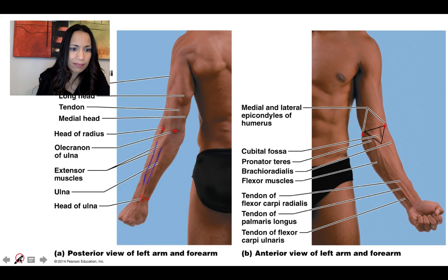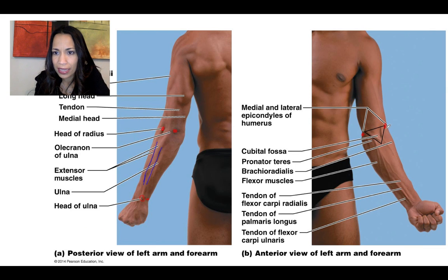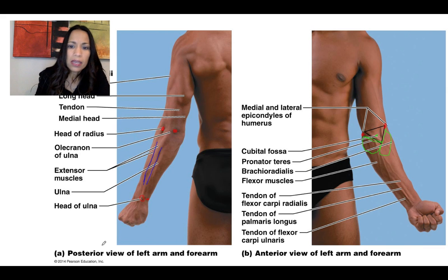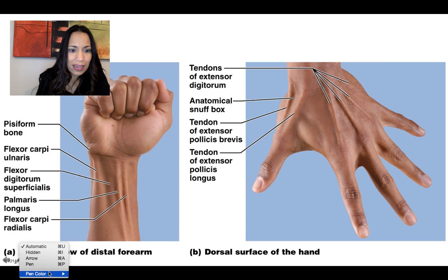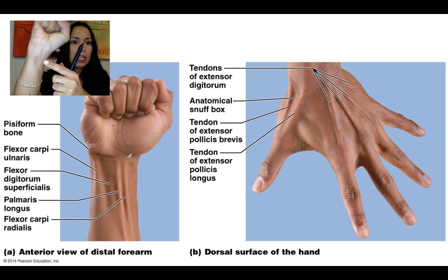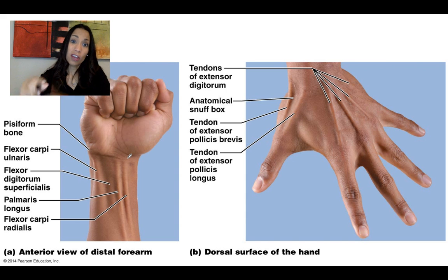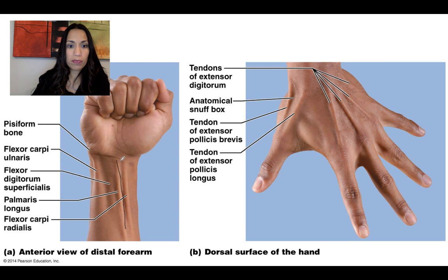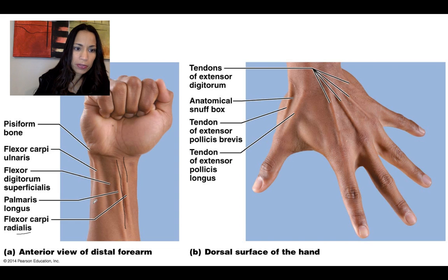Here is the brachioradialis, this is the pronator teres, and here you have the cubital fossa. When you make a fist, you'll be able to see the tendons of the flexor muscles in the anterior compartment. Some of you might have just one tendon instead of two because the palmaris longus is absent in about seven percent of people. The lateral tendon near the thumb is the flexor carpi radialis, the middle one is the palmaris longus tendon, and the other is the flexor carpi ulnaris tendon.